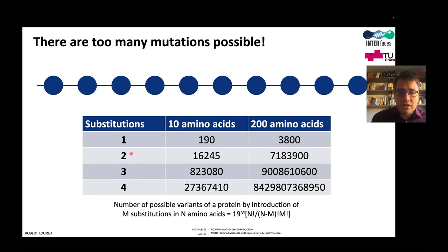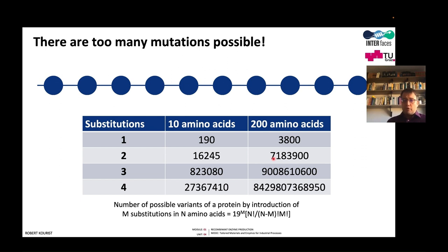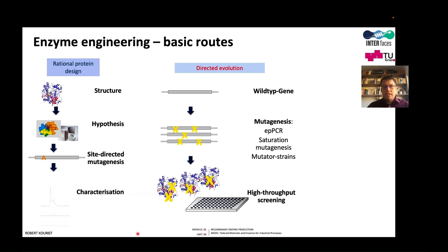All single amino acid mutations can give useful information, but we will certainly not achieve our objective that way. For a 200 amino acid protein, all double mutations give more than 7 million variants, which is beyond our experimental screening capacities. All triple or quadruple variants are out of the question, and even double mutations represent a tremendous amount of work.